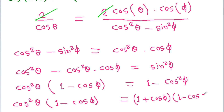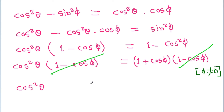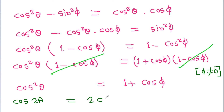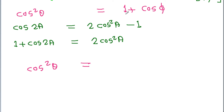So we have cos²theta·(1 - cos phi) equals (1 + cos phi)·(1 - cos phi). We can cancel (1 - cos phi) from both sides to get cos²theta equals 1 + cos phi. We know that 1 + cos 2A equals 2·cos²A, so 1 + cos phi equals 2·cos²(phi/2).